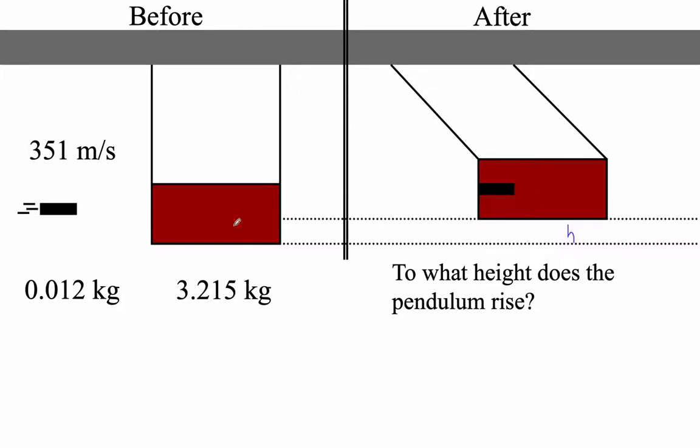We could use this to find the velocity of the bullet. In fact, this is called a ballistic pendulum, and this is how they found the velocity of bullets before we had high-speed electronics.